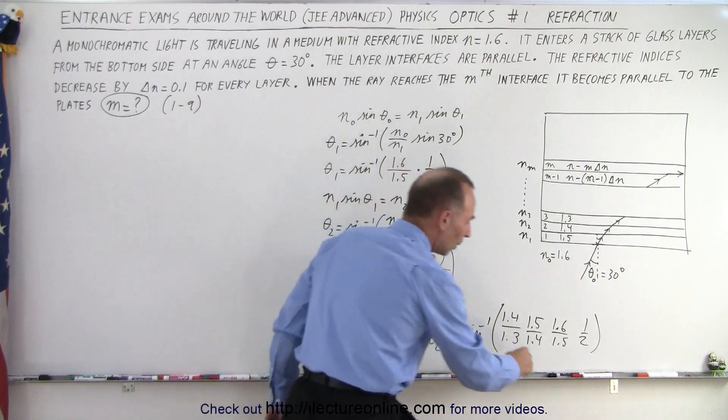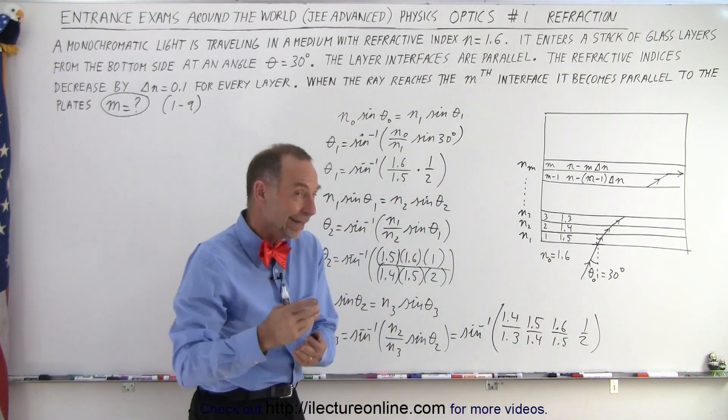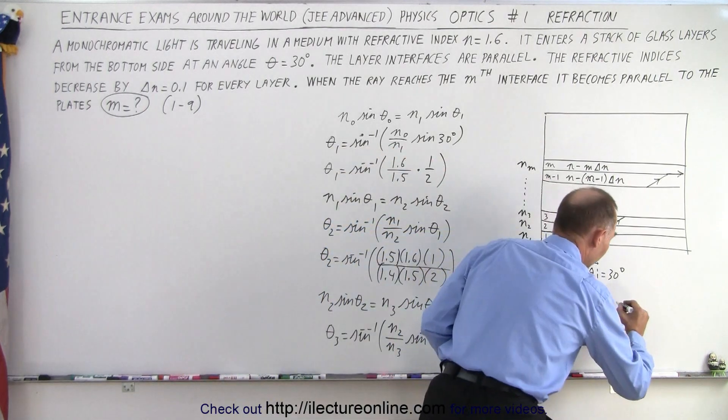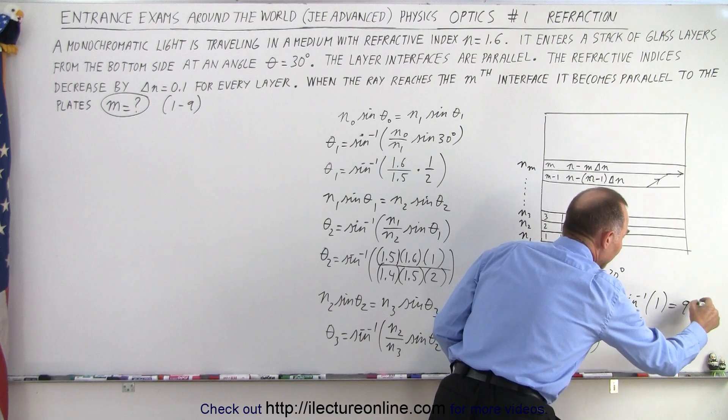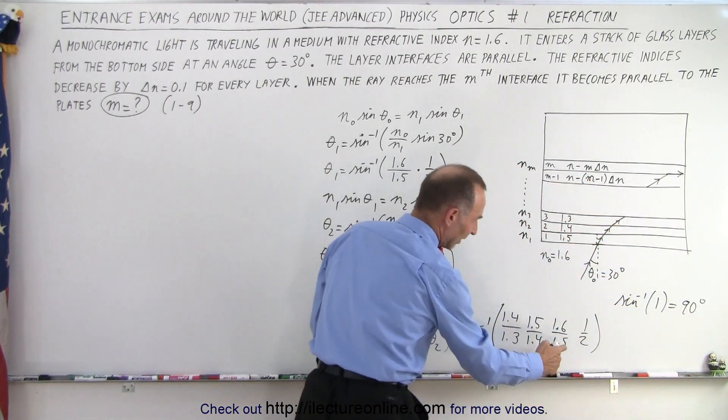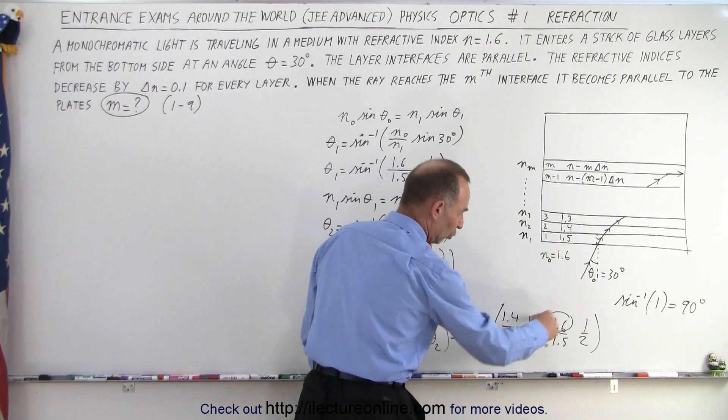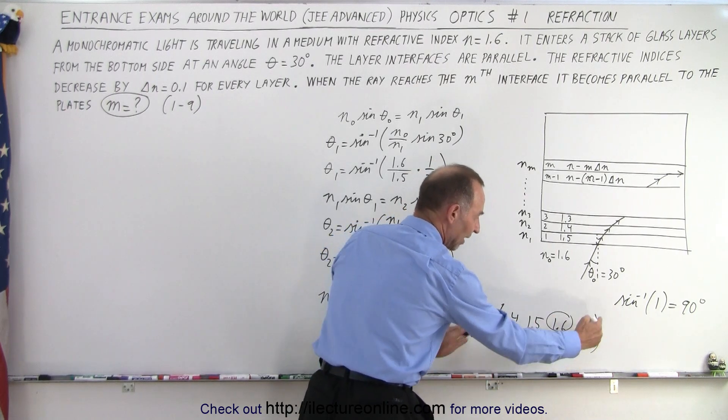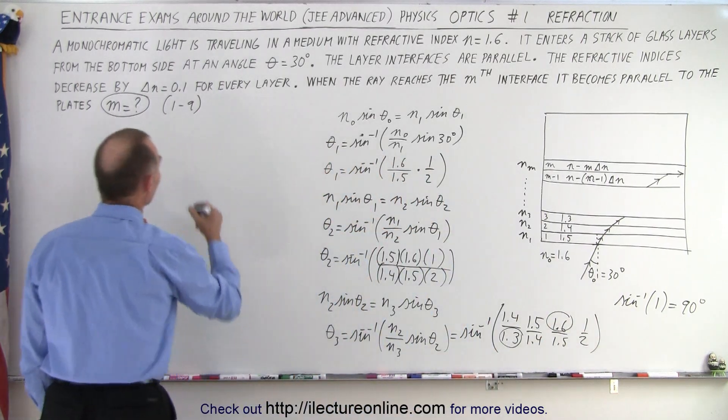It will be parallel when the quantity in here equals 1, because the inverse sine of 1 equals 90 degrees. So if I end up with this divided by this equal to 2 times 1 half, it gives the whole quantity inside the parentheses equal to 1. Let's see what this becomes now.